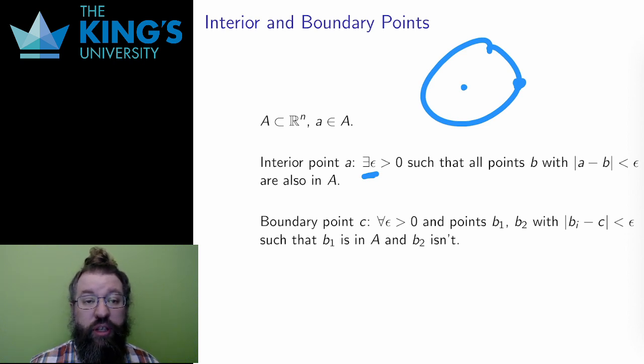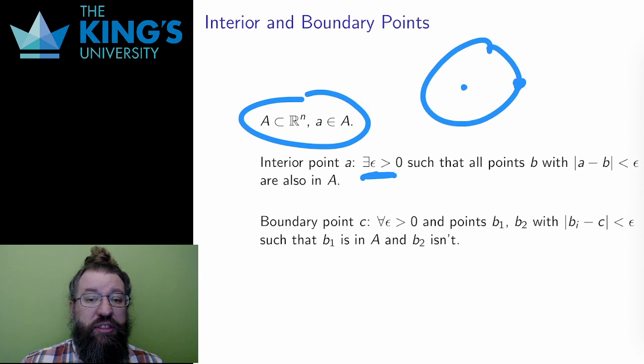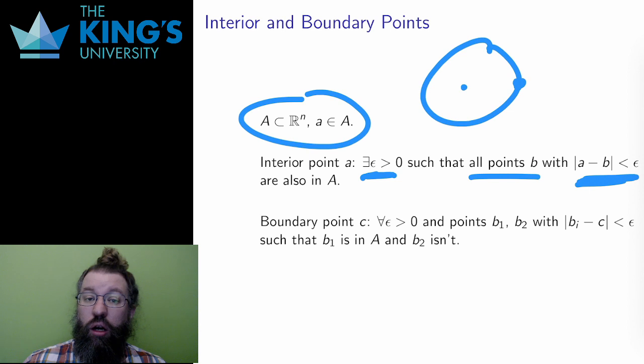So, consider a subset A of R^n. A point is an interior point if there exists an epsilon larger than 0 such that all points B that are within epsilon distance of A are also in the set.